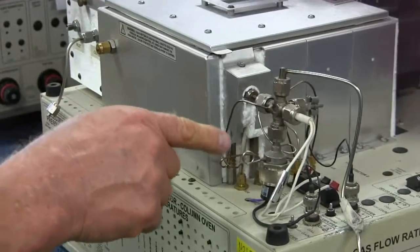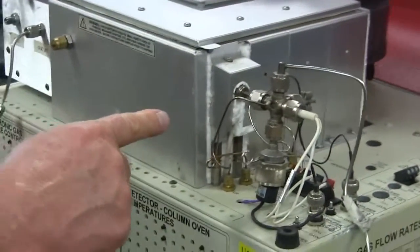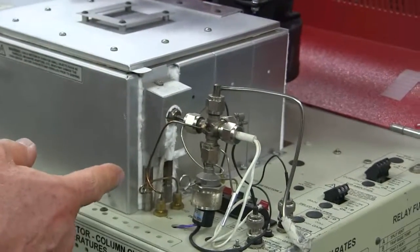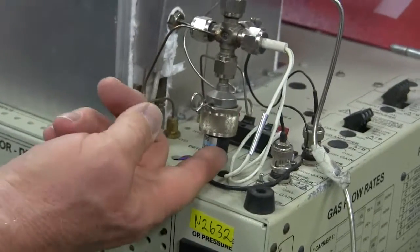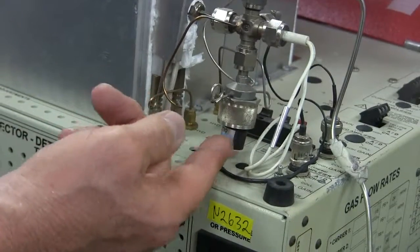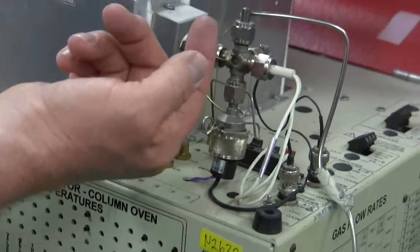This GC here is equipped with a flame photometric detector, typically used for detecting sulfur molecules. You can tell the FPD detector, flame photometric detector, because it has a photomultiplier tube in the bottom which is staring up at the flame.